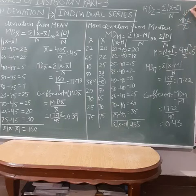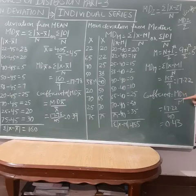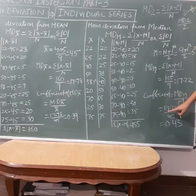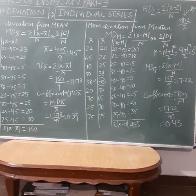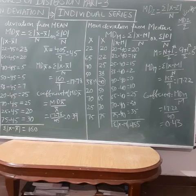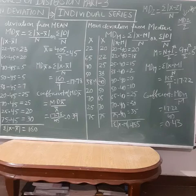So this is the formula for the coefficient. Simply: mean deviation from median divided by median, which is 17.22 divided by 40, giving 0.43. It is very easy — with just a little care you will be able to solve all the numericals. Thank you.